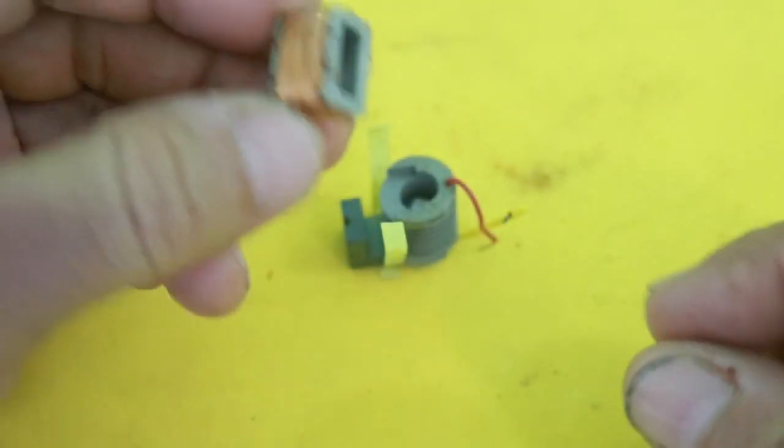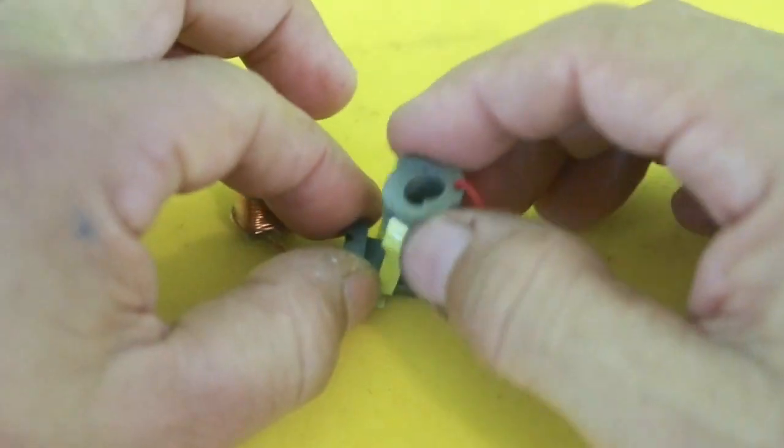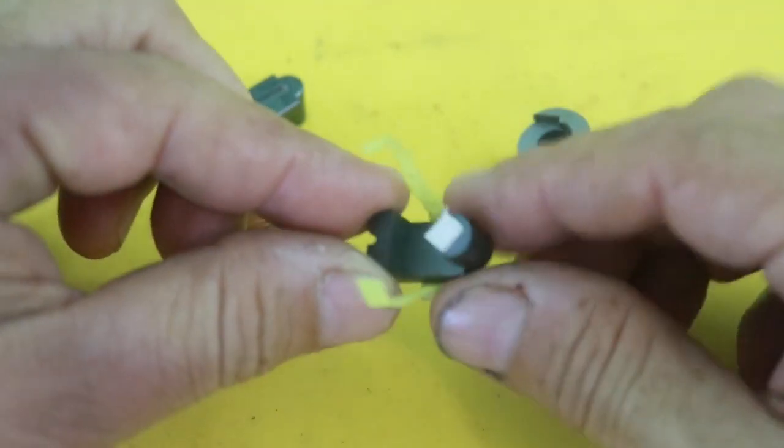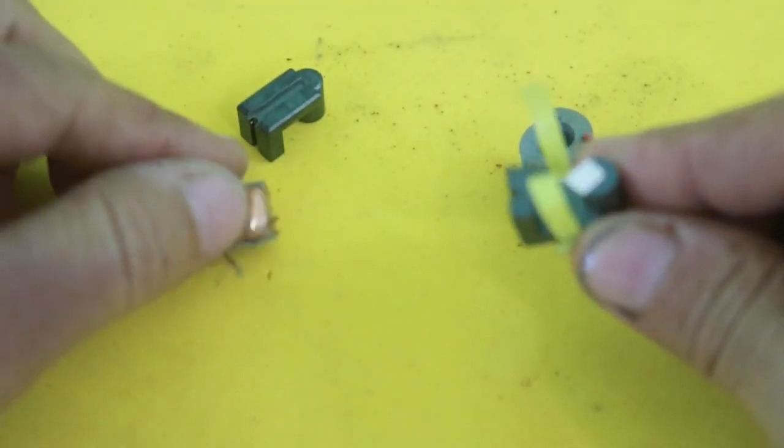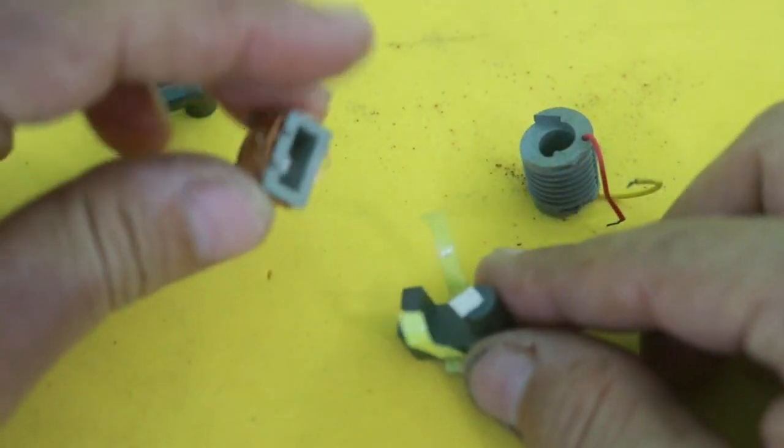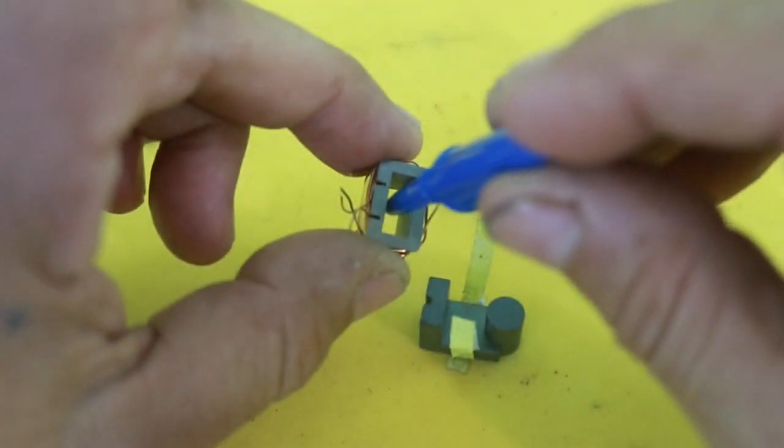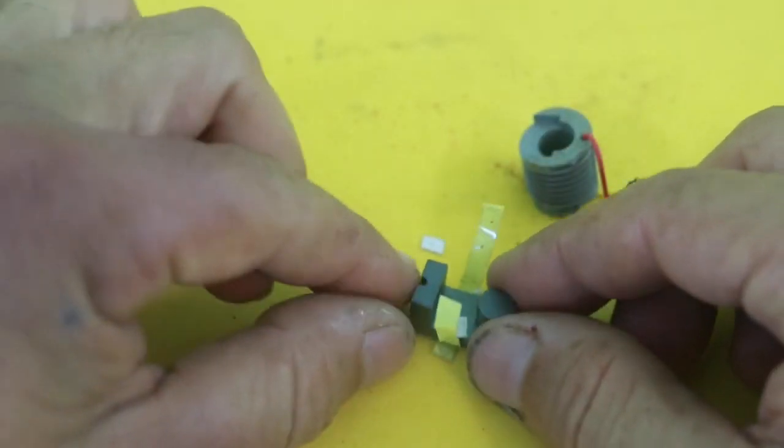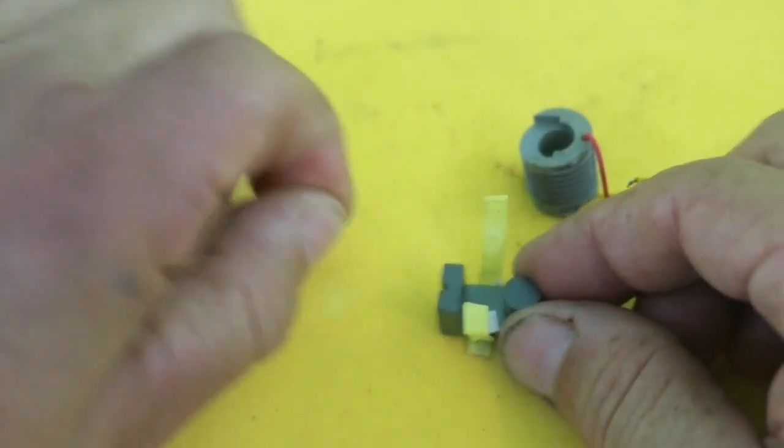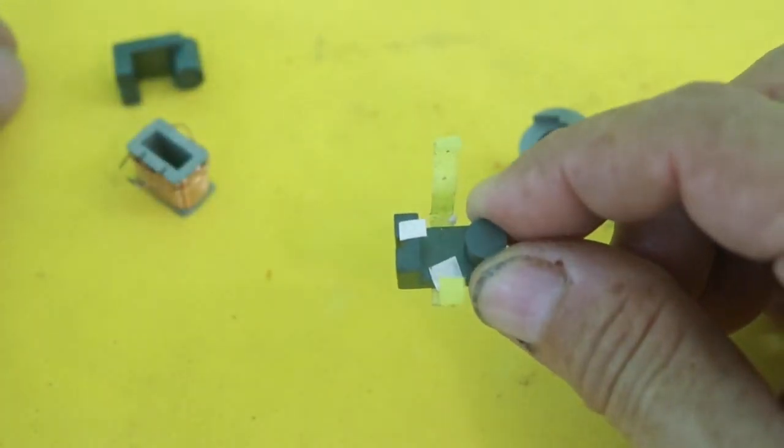You must be careful when disassembling because there are two little plastic pieces separating the core, and they are necessary for the correct working of the transformer. These two pieces of paper must be put again in the core before assembling again.